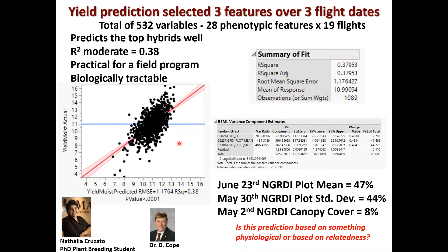Expanding on this, Natalia Cruzado, who's still a PhD student with me, took structural features like plant height and added a whole bunch of spectral features, estimating a total of 532 variables — 28 different phenotypic features and various vegetation indices calculated in different ways over 19 flights throughout the growing season. Using a linear model, which is by far the most efficient, she was able to predict the top 10% of yielders in the Genomes to Fields program using just a subset of three features over three flight dates.